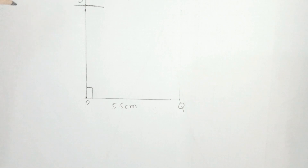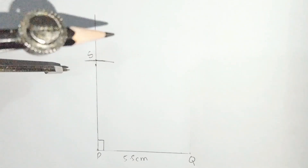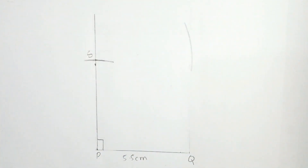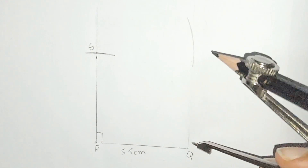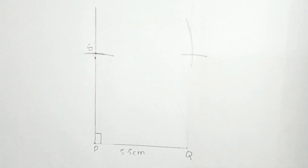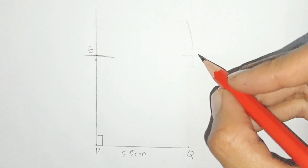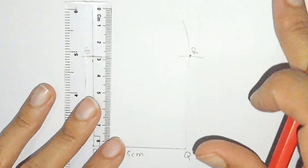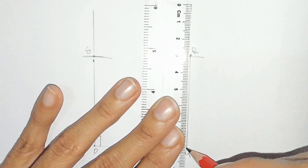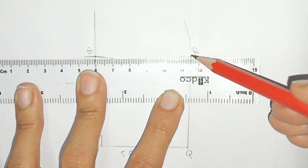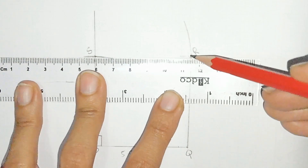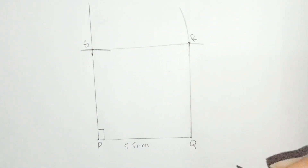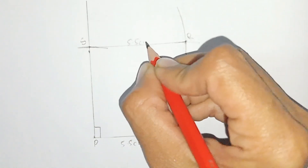Taking P as center, mark the point S. This is point S. Since this is a square, taking S as center, draw an arc, and taking Q as center, draw an arc — they cut at point R. Now join point R with Q and with S. These lines are also 5.5 centimeters.